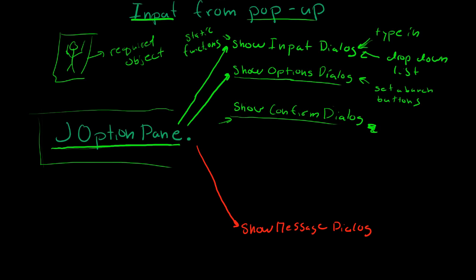JOptionPane, it doesn't care. It's completely based off of the arguments that you give each of these functions.